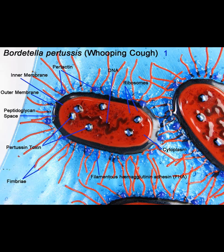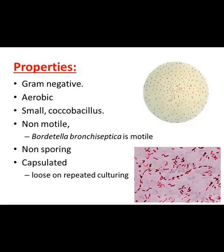These are not flagella — these are fimbriae, okay. These are adhesins by which the organism is adherent to the underlying mucosa. These are filamentous hemagglutinin adhesins — these are pili. Then comes the fimbriae and pertactin — these are collectively called adhesins. These are Gram-negative rods which are aerobic and small coccobacilli. They are non-motile — no flagella.